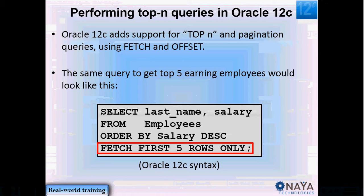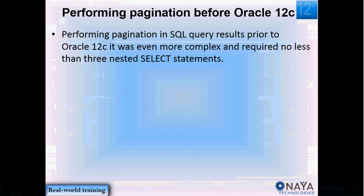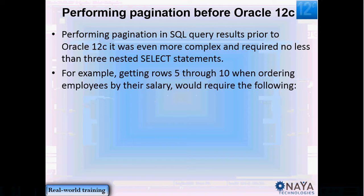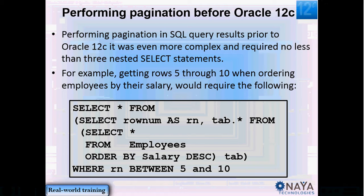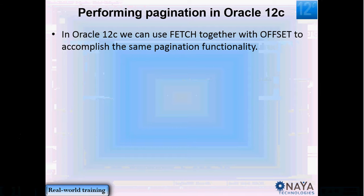Now, how about pagination? This was the first five employees. How about the next five employees, if I want to view employees 6 through 10? Again, prior to Oracle 12c, I would have to use inline views and the ROWNUM pseudocolumn, and this time actually three SELECT statements — an inline view within an inline view. So this is not so clear to understand, and not so fun to write also.